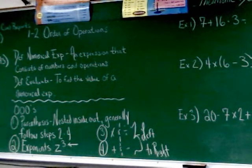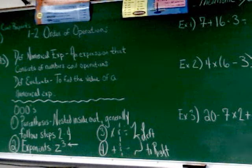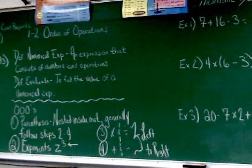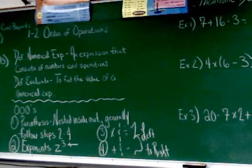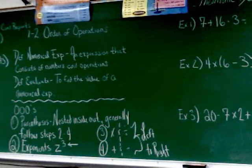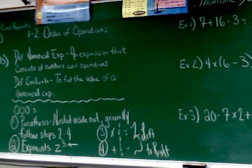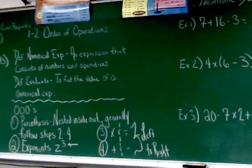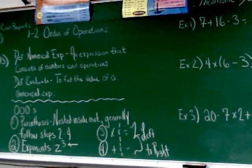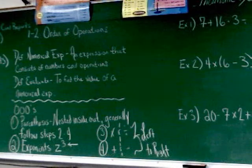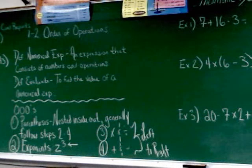There are four steps in the order of operations. The first step is parentheses. Now the first thing under parentheses says that nested parentheses have to be done inside out. And you're probably asking yourself what are nested parentheses? Nested parentheses are simply parentheses that are inside another set of parentheses.